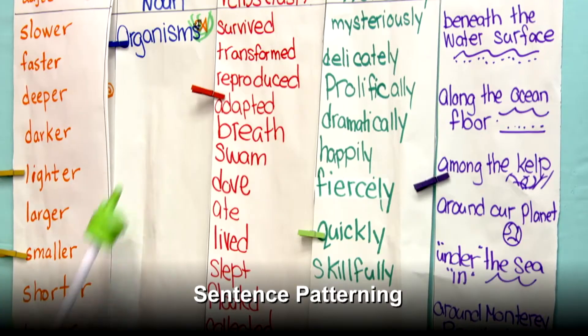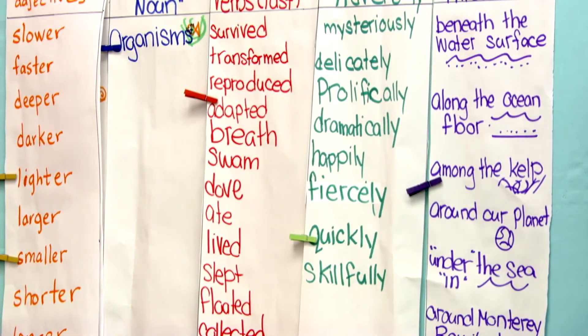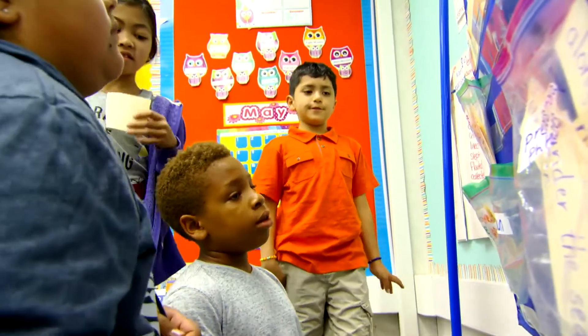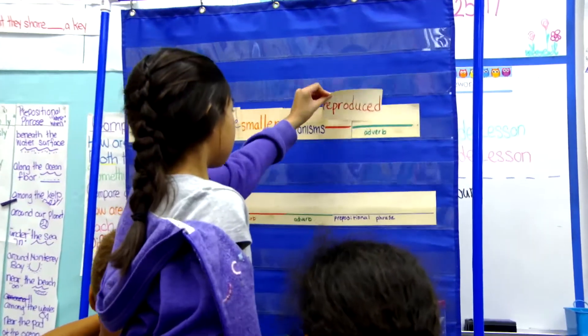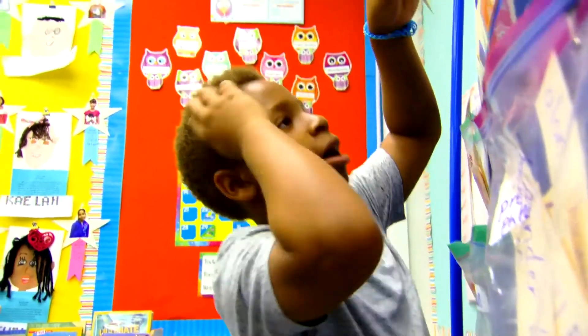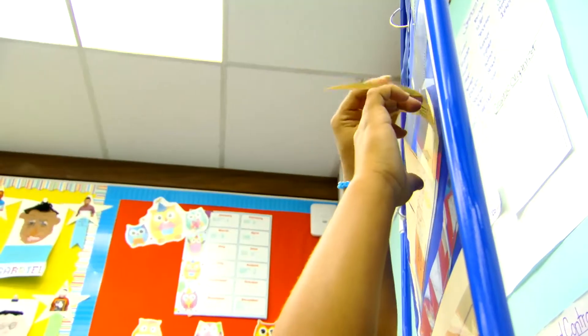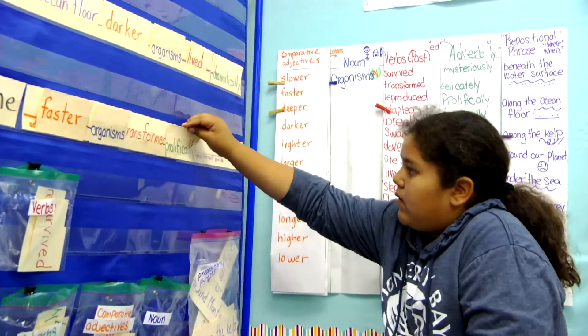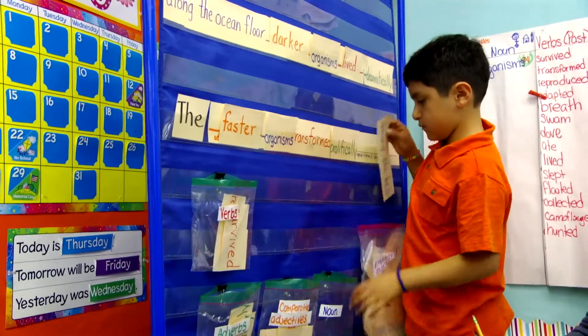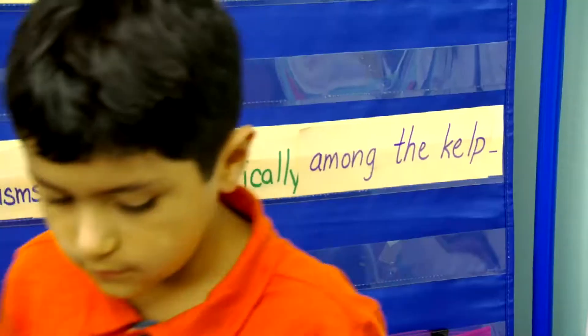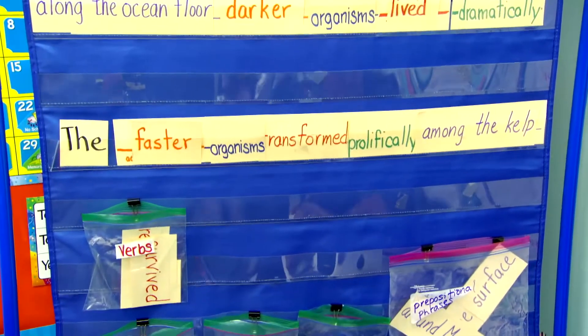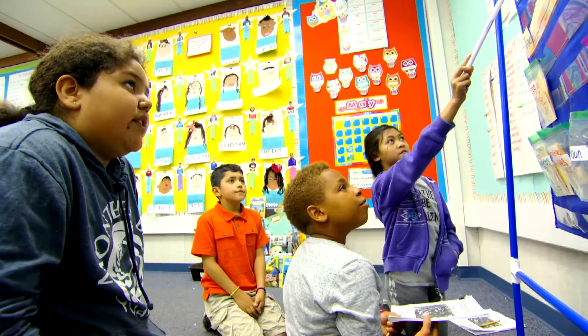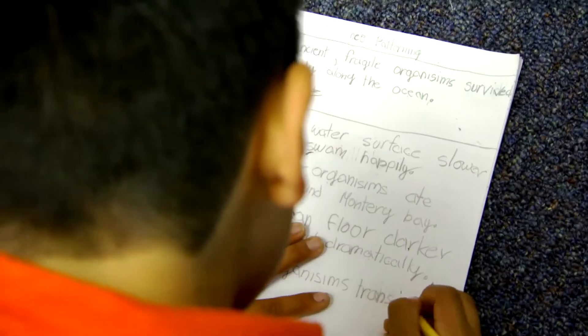Another typical Daily Five activity is word work — working with vocabulary, sentences, and grammar. We saw a group doing what we call the sentence patterning chart, which involves structuring complex sentences using adjectives, in this case comparative adjectives, because this is a compare and contrast unit. Students are constructing sentences about the ocean and ecosystem in a way that makes them more aware of how to structure a sentence in English — a preface to their own writing. As they structured the sentences, they were saying them, talking about them, and then writing them in their own notebooks.